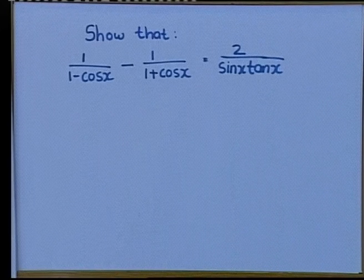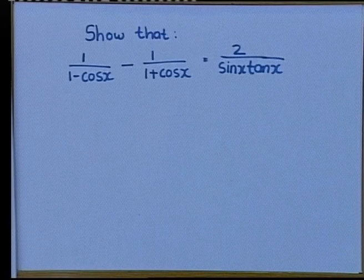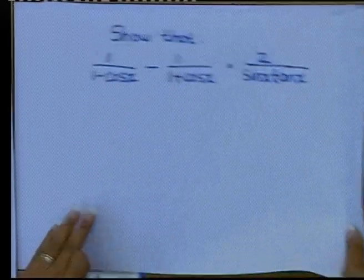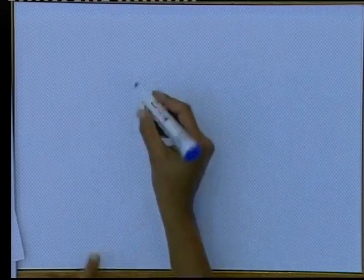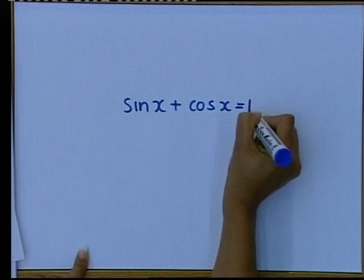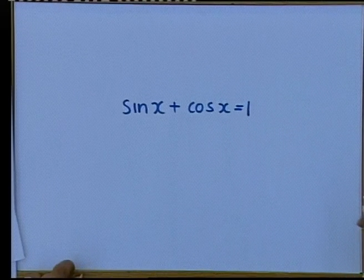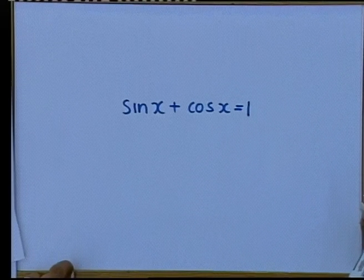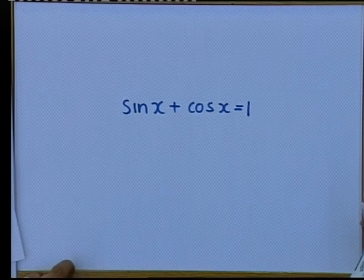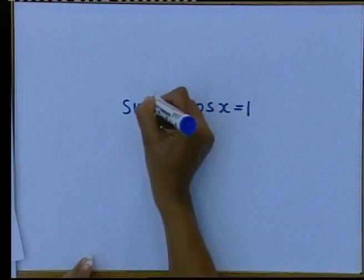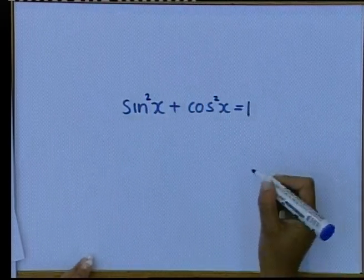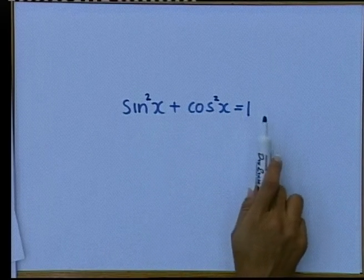Somebody's asked me: is sin x plus cos x equal to 1? Not at all. Bonga, in the identities, is sin x plus cos x equal to 1? Not at all. There has to be a square. Sin squared plus cos squared is 1. Please, Bonga, this is important.